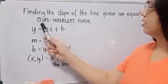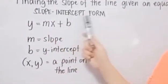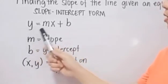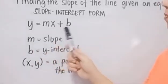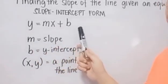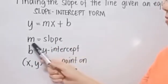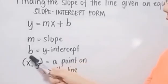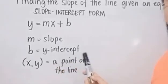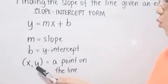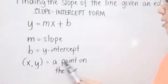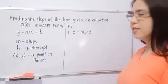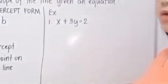This is the slope-intercept form of equation: Y is equal to MX plus B, where M is the slope, B is the Y-intercept, and XY is a point on the line. Let's have the first example.